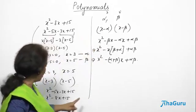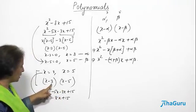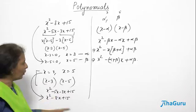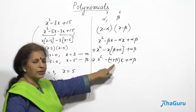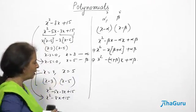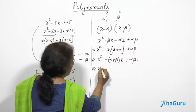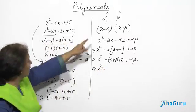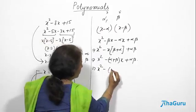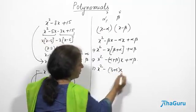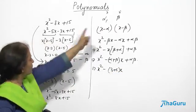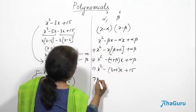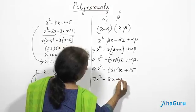Now look here — I had x minus 3 and x minus 5, and I went about multiplying to get the answer. But if I just use this formula: x squared minus (alpha plus beta)·x plus alpha·beta — what is alpha plus beta? That's 3 plus 5. What is alpha·beta? Just multiply: 3 into 5 is 15. So x squared minus 8x plus 15. I got the answer.